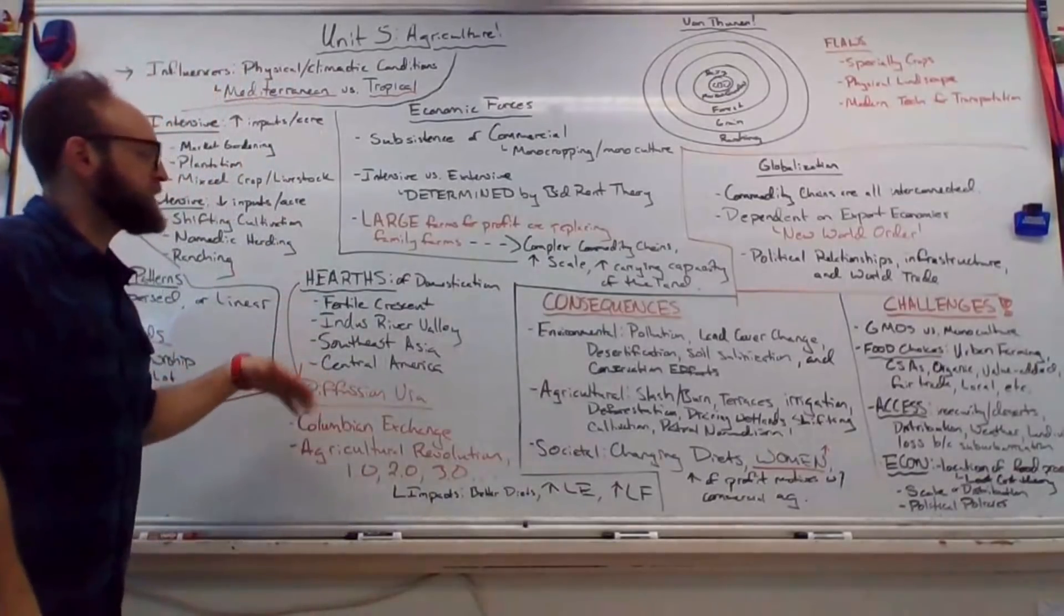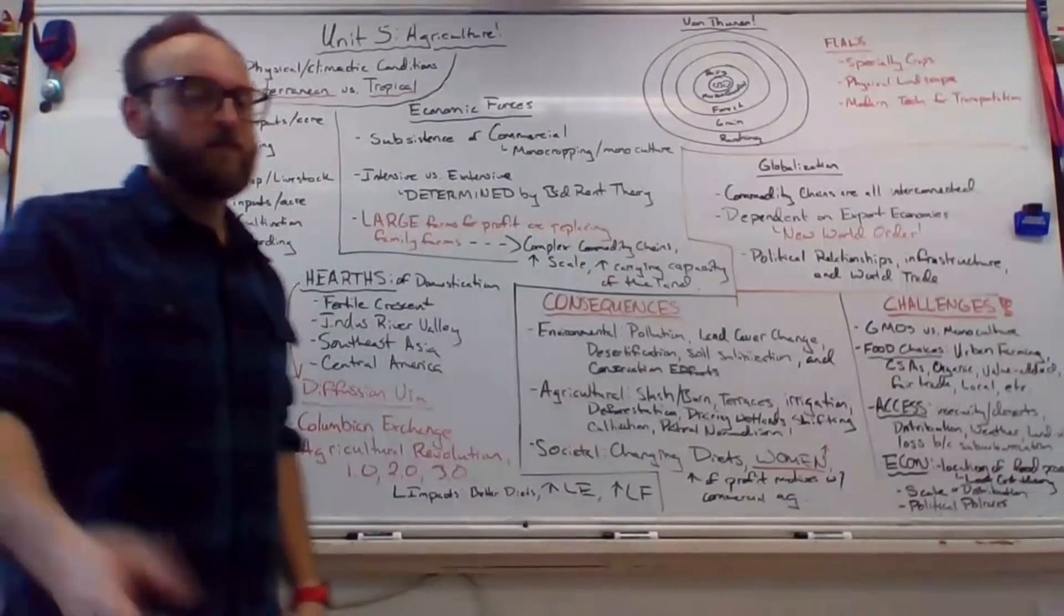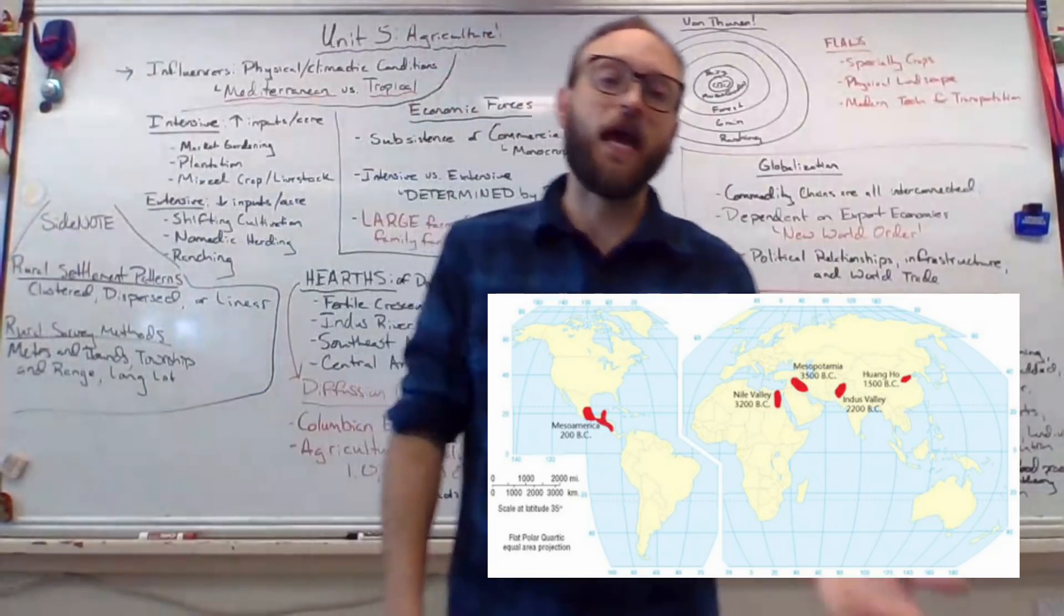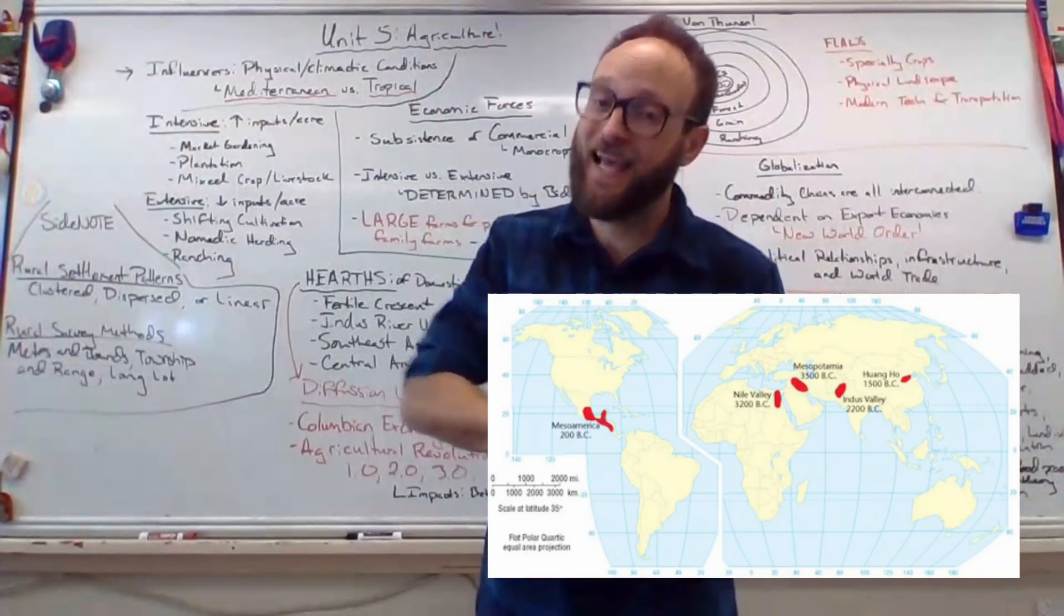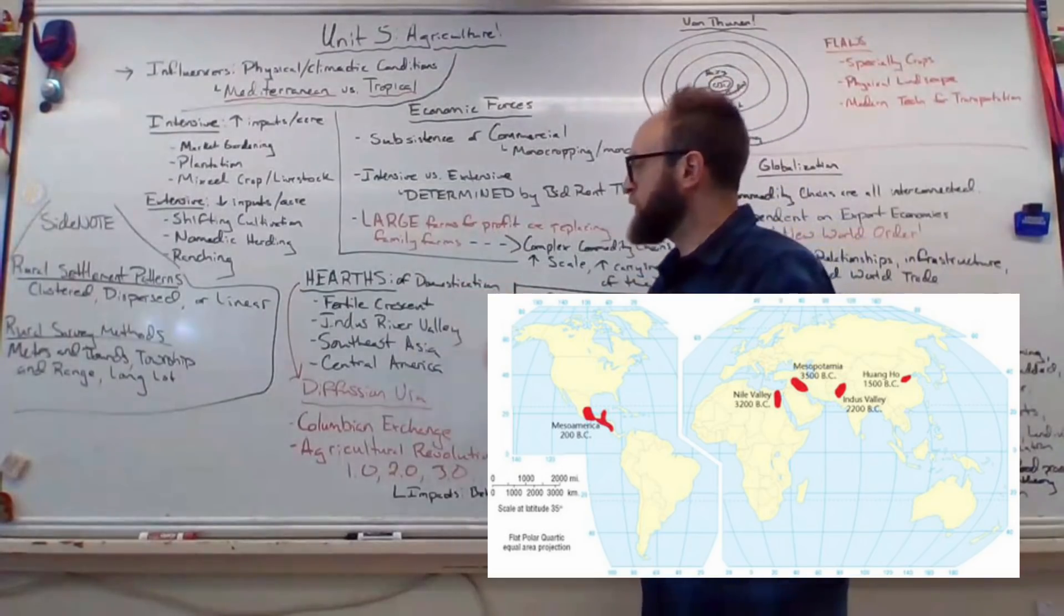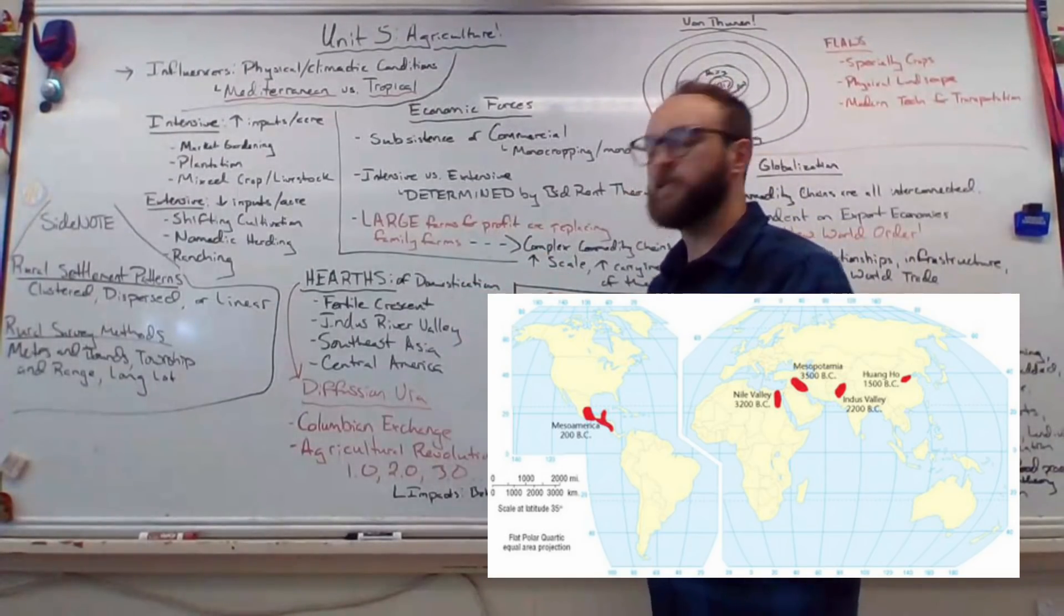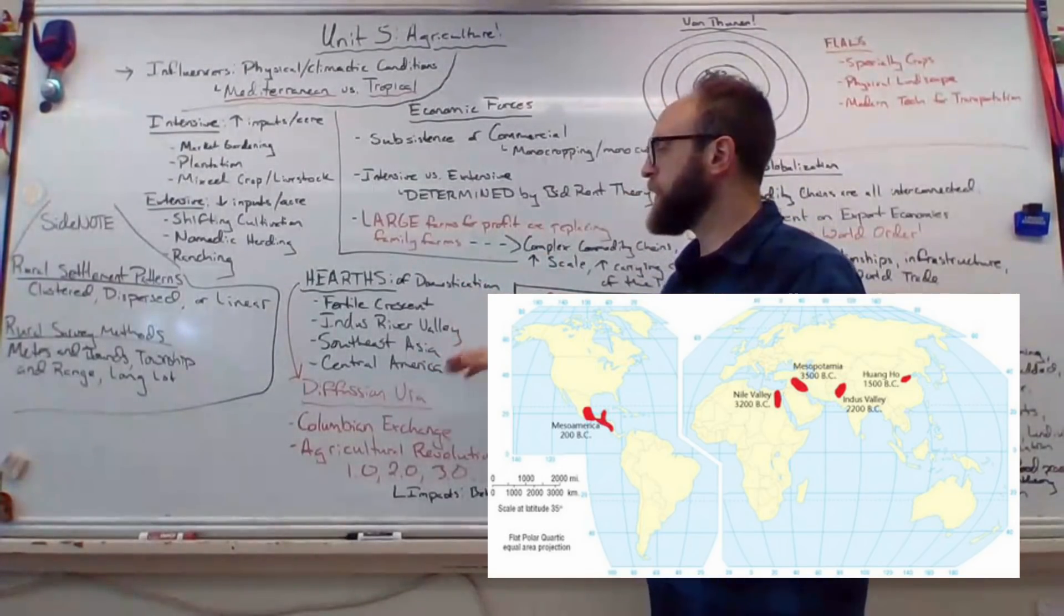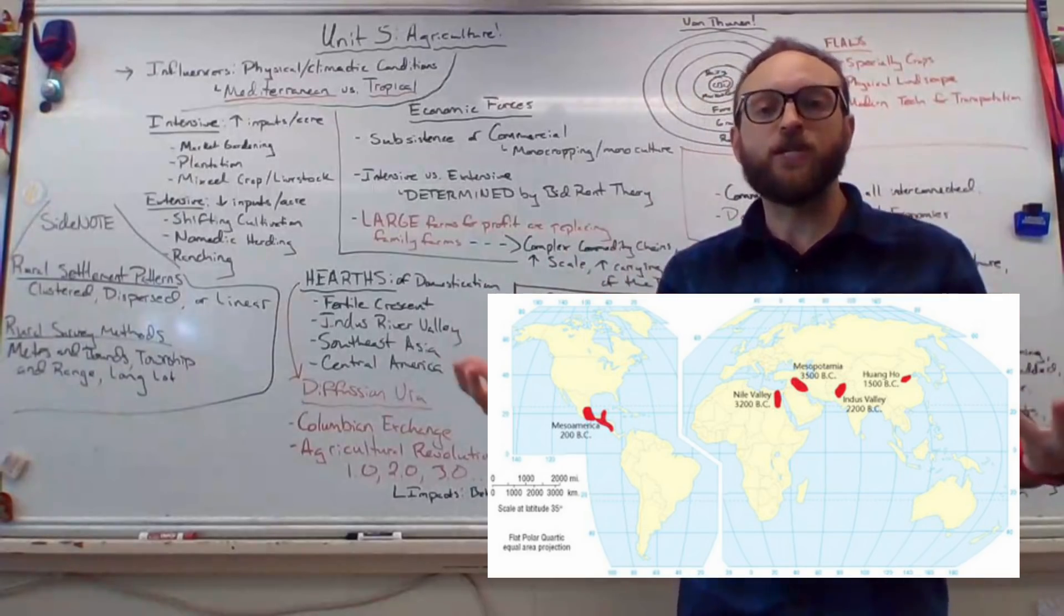Hearths of domestication for plants and animals. Don't forget that sometimes this is called the Neolithic, our first agricultural revolution, which took place about 10,000 years ago. And we're talking about the Fertile Crescent, Indus River Valley, Southeast Asia, Central America. You just kind of need to know where they are and that that's where we originate.